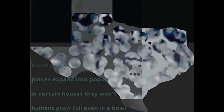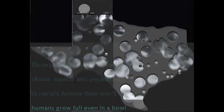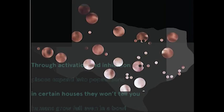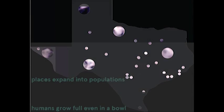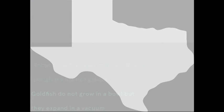Through activation and inhibition, places expand into populations. In certain houses they won't tell you humans grow a pole even in a pole. Places do not expand with population.